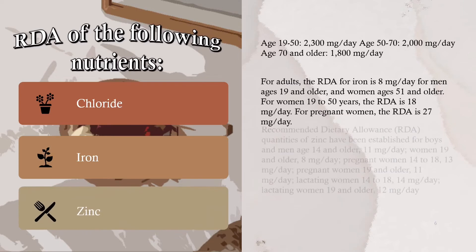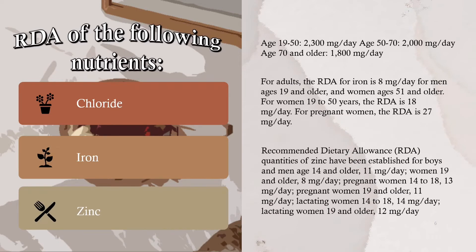Zinc: Recommended dietary allowance quantities of zinc — boys and men age 14 and older: 11 milligrams per day; women 19 and older: 8 milligrams per day; pregnant women 14 to 18: 13 milligrams per day; pregnant women 19 and older: 11 milligrams per day; lactating women 14 to 18: 14 milligrams per day; lactating women 19 and older: 12 milligrams per day.